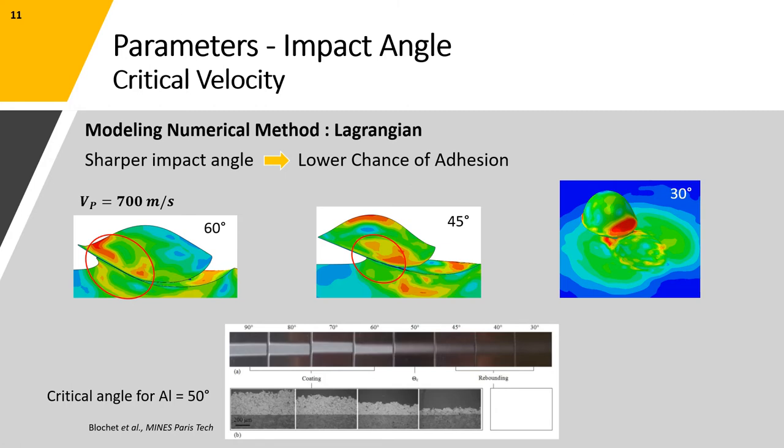We used a single particle Lagrangian model to analyze the effect of particle impact angle on the adhesion and critical velocity. For this purpose, we considered three impact angles equal to 60, 45, and 30 degrees, and for each angle, we considered particle velocities ranging from 500 to 900 meters per second, increasing the particle velocity in 100 meter steps. As can be seen both in our findings and also the previous experiments which are shown below, as the angle of impact decreases, the area of the adhesion does also decrease.